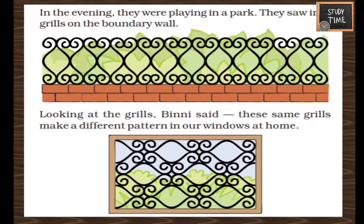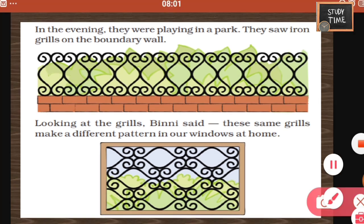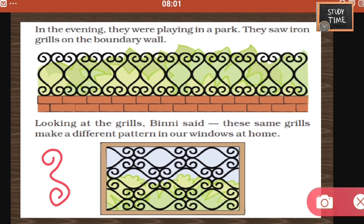Next, in the evening they were playing in a park. They saw iron grills on the boundary wall. Looking at the grills, Binni said these same grills make a different pattern in our windows at home. This is a pattern — this is the main design, arranged in the boundary walls of the park. The same design is arranged in a different way to make different patterns in their windows at home. You can try making different patterns from the same design.